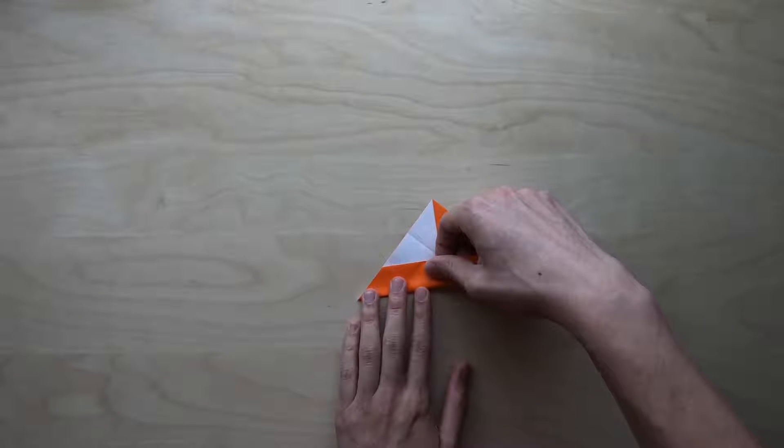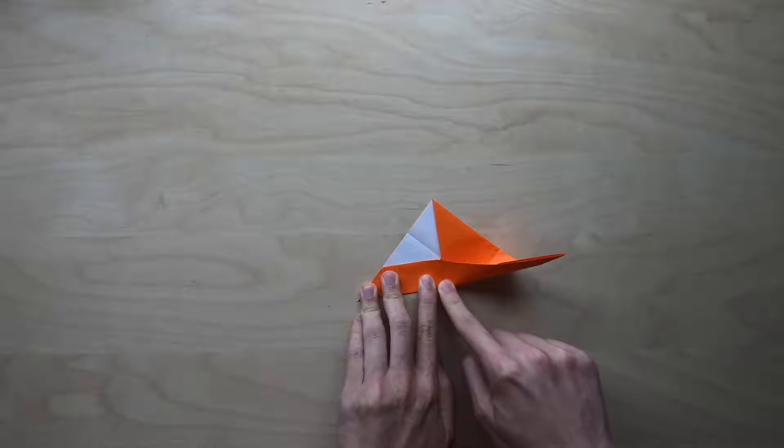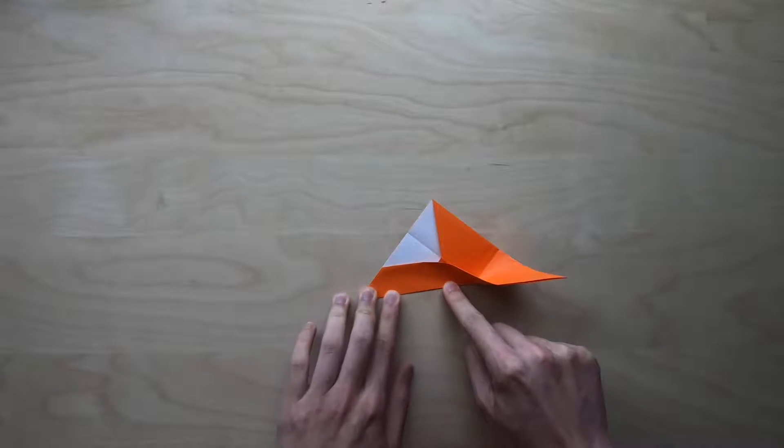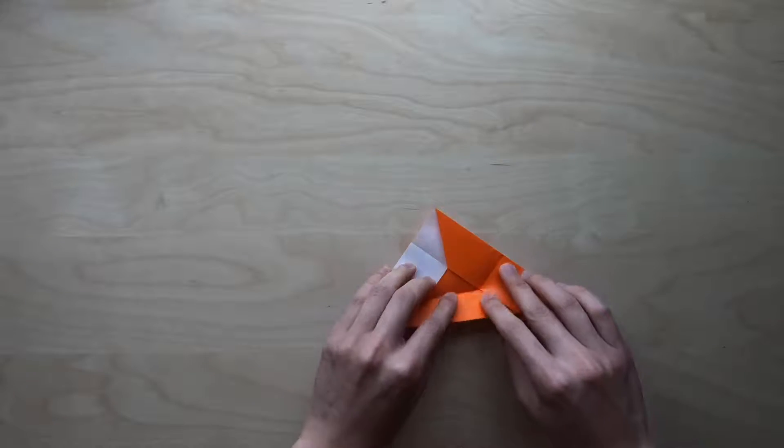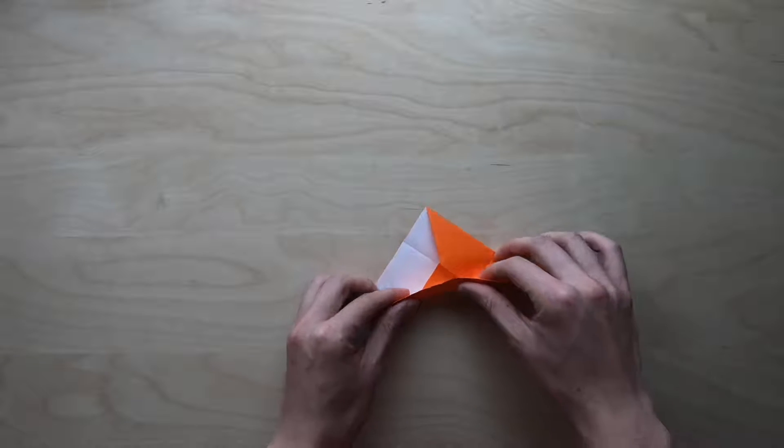Right here we're going to try to fold from this corner all the way here. Press it down right there and start pressing down all the way till that intersection, and then we stop right there.